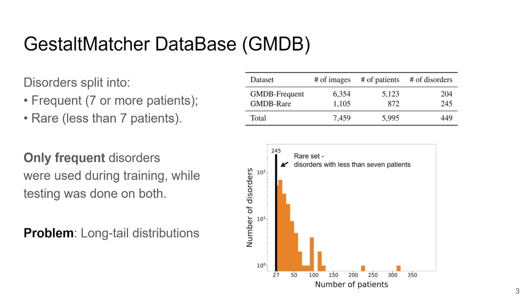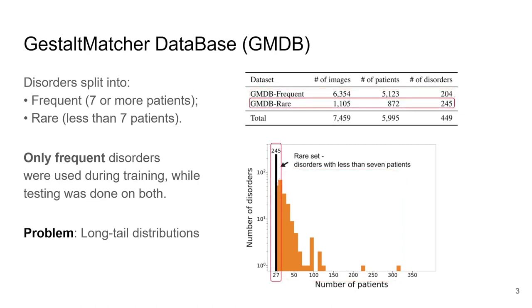The dataset is split up into frequent and rare disorders. A disorder is labeled as frequent if there are seven or more patients, and labeled as rare if there are fewer than seven. Only frequent disorders are used during training, while testing was done on both frequent and rare disorders. As such, we're looking for an approach that is able to cluster similar disorders, even unseen ones.